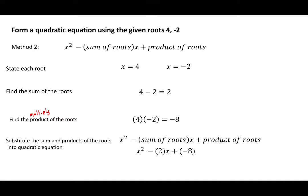We simplify this and get x squared minus 2x, and a plus times a minus gives us minus 8. Our quadratic equation is x squared minus 2x minus 8. Please pause and take down this example.